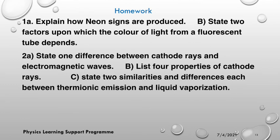Thank you for being a part of this lesson. I believe that you have learned and will continue to learn from this video. You can always come back and play the video over and over again until you get all the facts and knowledge that you need. Here is a homework: explain how neon signs are produced; state two factors upon which the color of light from the fluorescence depends; state one difference between cathode rays and EM waves; list four properties of cathode rays; state two similarities and two differences between thermionic emission and liquid vaporization. All of this you will find if you go over this video again. Thank you — do not forget to subscribe, like, share and drop a comment.